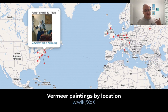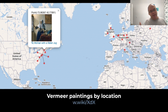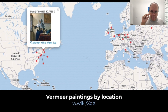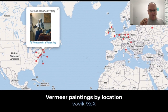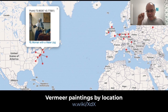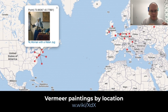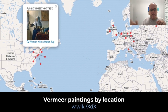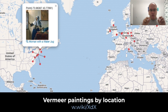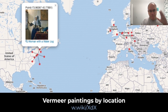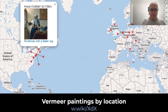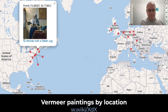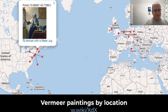Here we see paintings by Vermeer. We ask for where the painting is hosted, we ask for the geocoordinates of the host — like the museum — and then we load the picture from Wikimedia Commons and visualize all of this on top of a map from OpenStreetMap. Just a query to Wikidata.